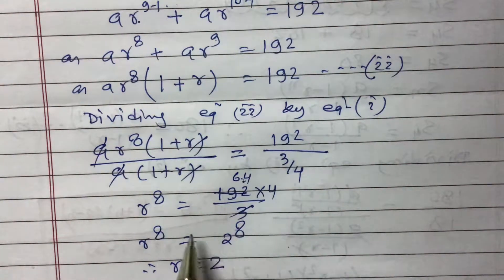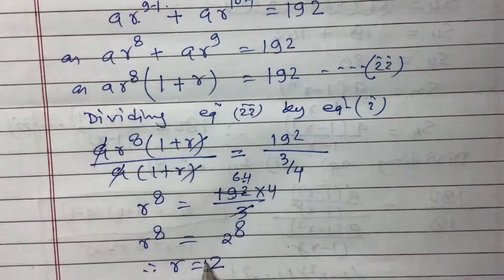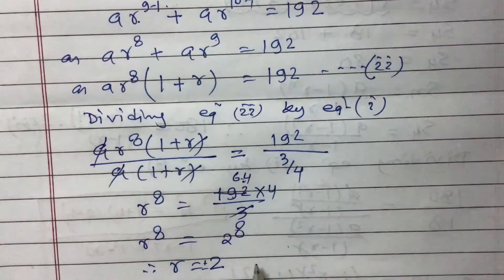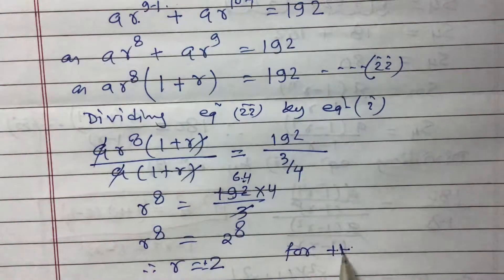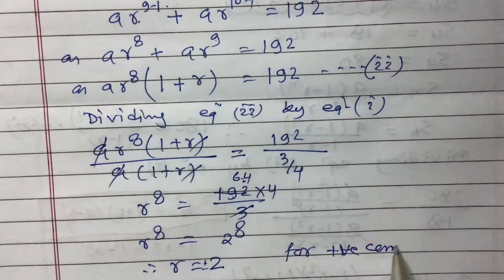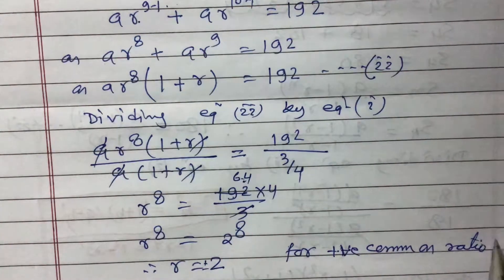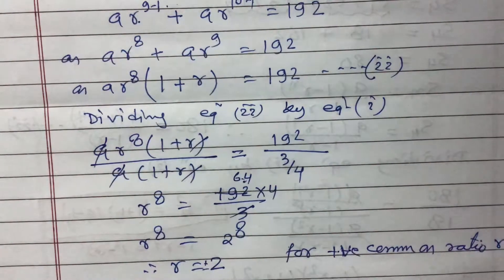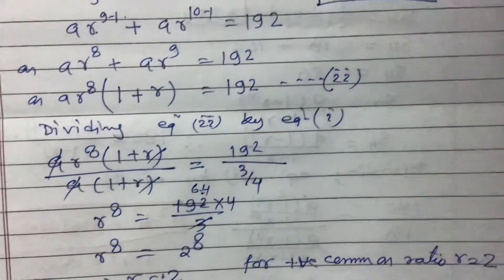Since the exponent 8 is an even number, we can write r = ±2. However, since a positive common ratio is given, we take r = 2 only.